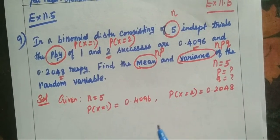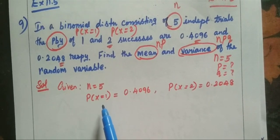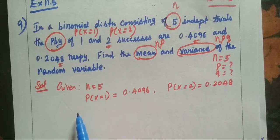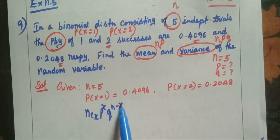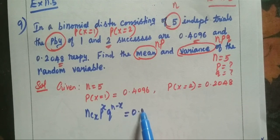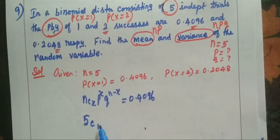So, given n equals 5, P(X=1) equals 0.4096. What is P(X=r)? That is the formula. So, directly substitute the formula: nCx times p power x times q power n minus x equals 0.4096. n is 5 and x is 1.